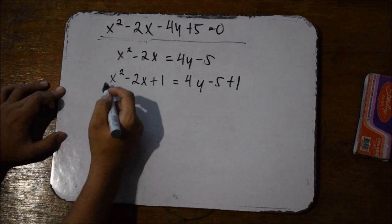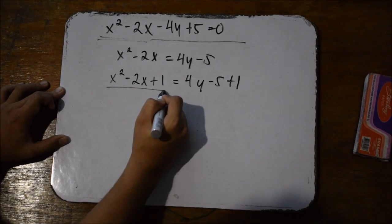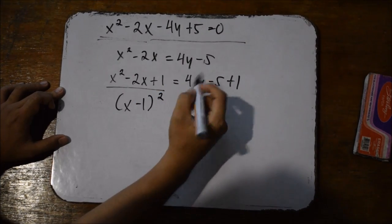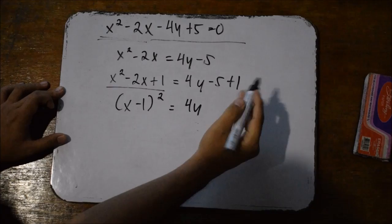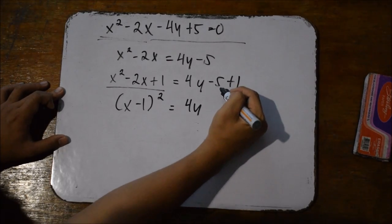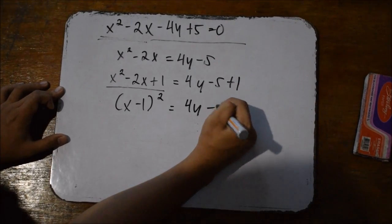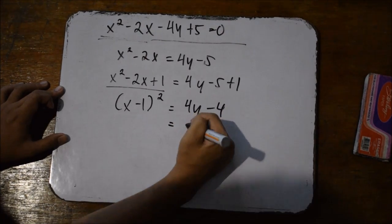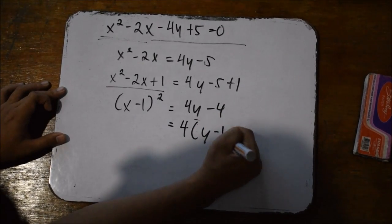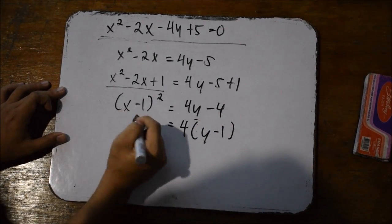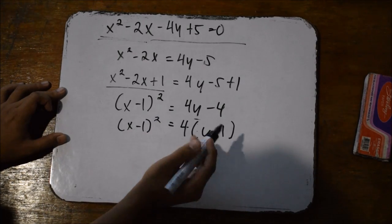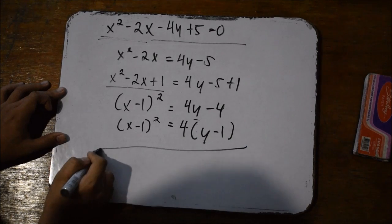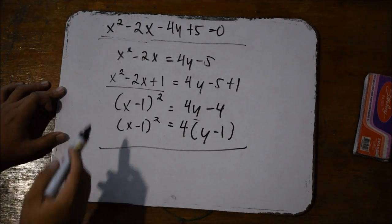We know that this equation can be simplified as x minus 1 squared is equal to 4y minus — negative 5 plus 1 is negative 4. Then we simplify because we know it can be factored: 4 times the quantity of y minus 1. Copy the left side: x minus 1 squared is equal to 4 times the quantity of y minus 1. So we transformed the equation from the general form to the standard form.